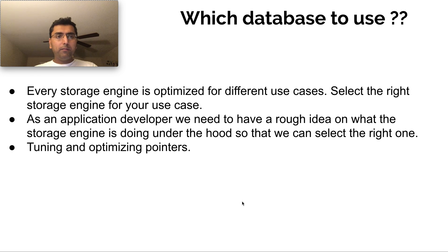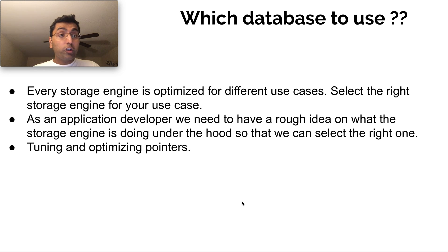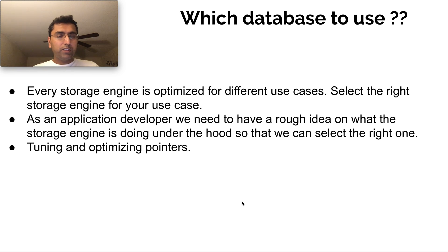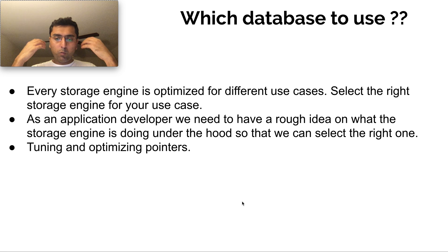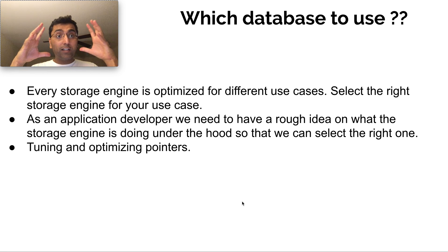As an application developer, it's very important for us to know how these database systems work. What are they optimized for? What are the use cases that you want to use these storage systems for? And if we have some rough idea of what's going on under the hood of some of these systems, then we can actually tune it properly and use the right tools for our use cases. So that's the key takeaway from this chapter: we'll get a high-level overview of various types of storage systems, what they do under the hood, what kind of data structures they use, how to go about picking the right one, and in what situation.